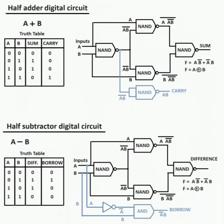Half adder digital circuit for A plus B, with all conditions for AB, with sum and carry. The digital circuit given for the half adder uses 5 NAND gates. Sum is equal to A exclusive-or B, and carry is equal to AB.